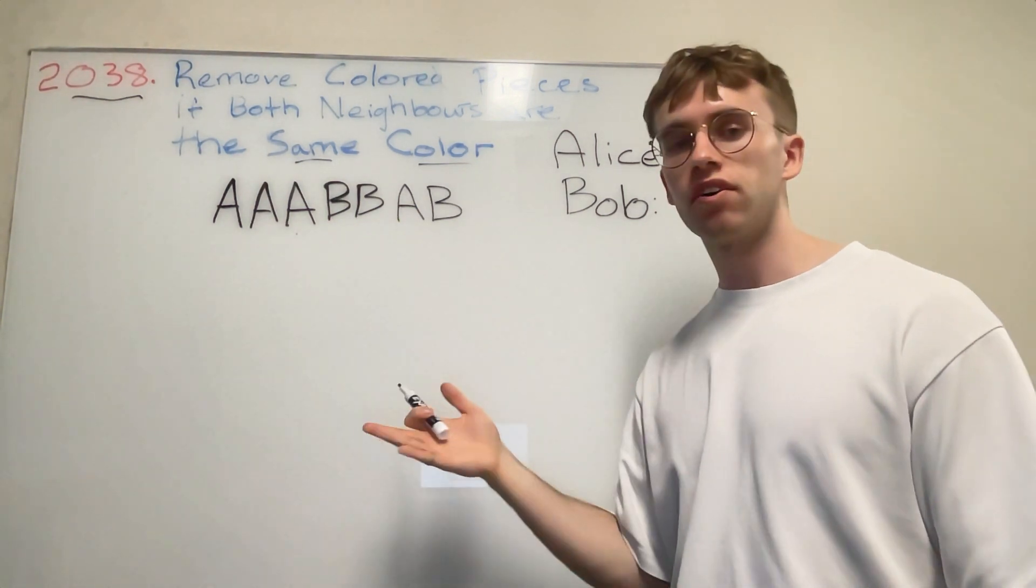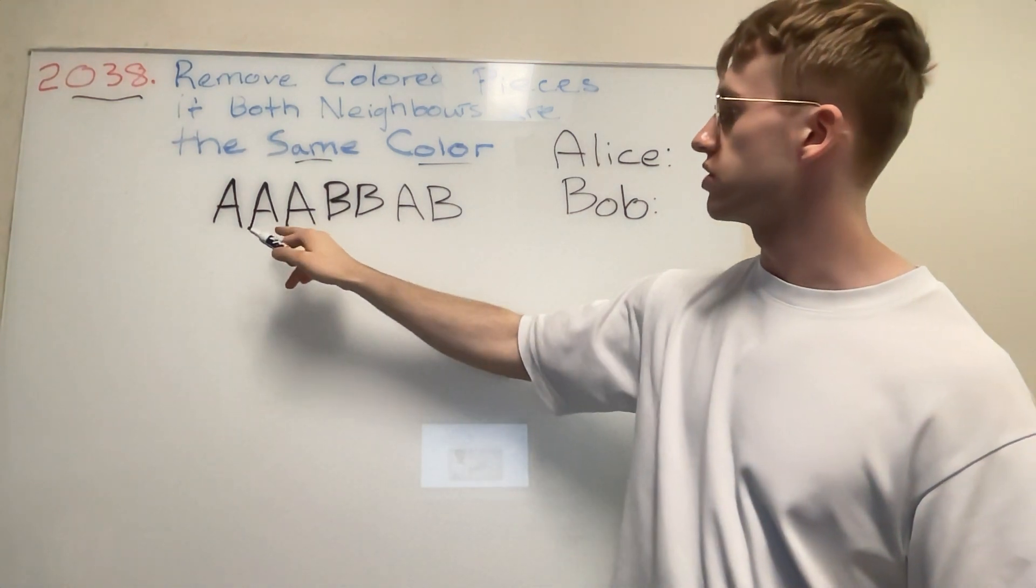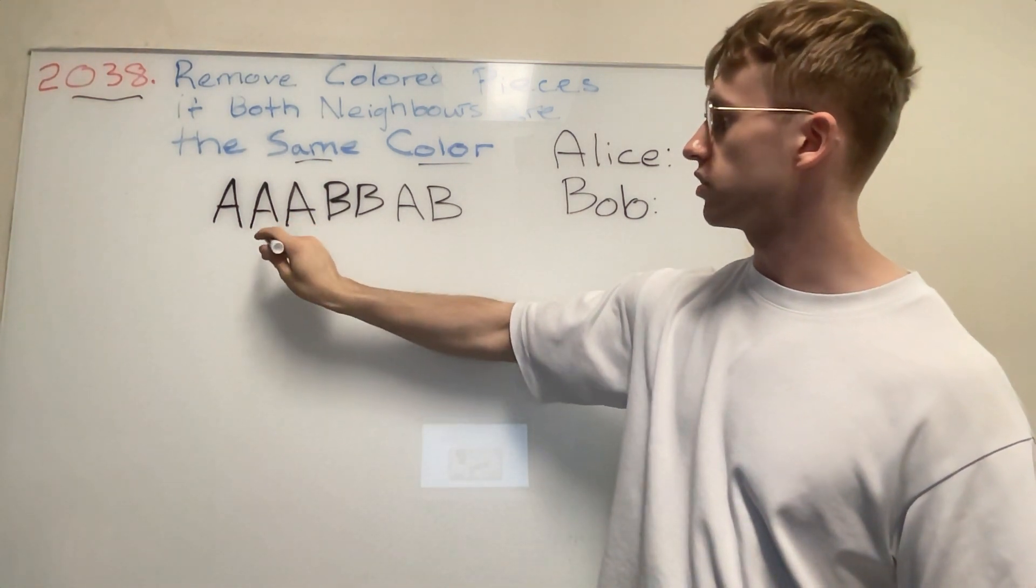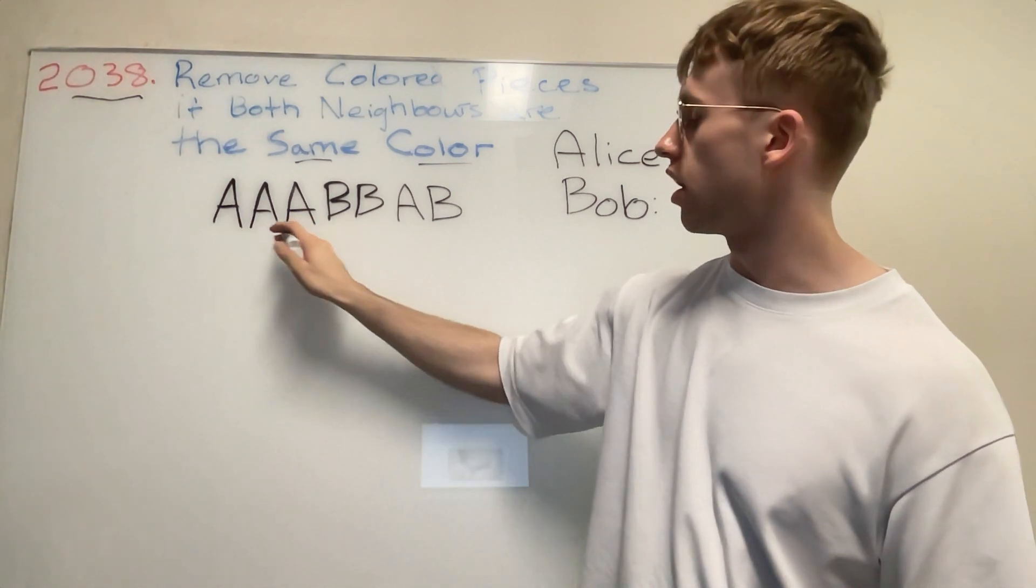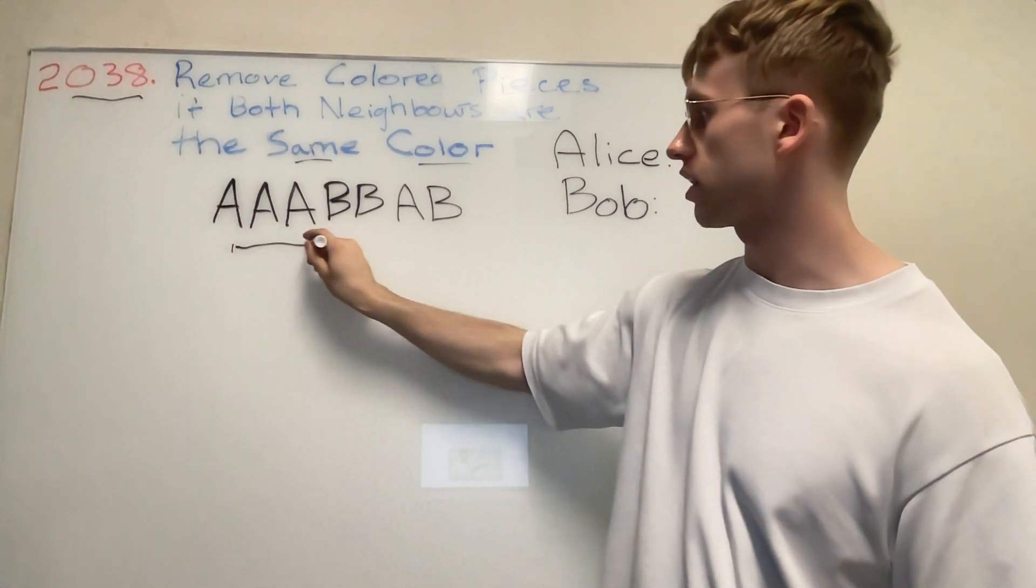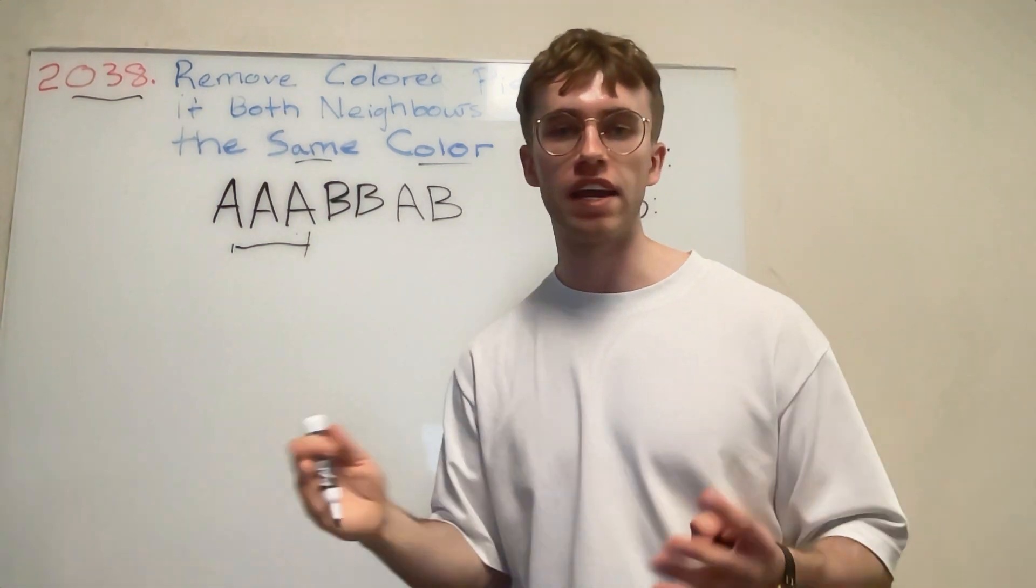When it's Alice's turn, Alice is allowed to basically remove a letter A that's in the middle, so long that there are three contiguous or consecutive A's in a row.